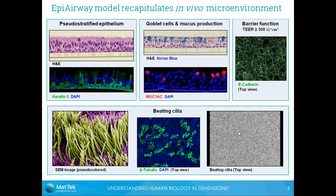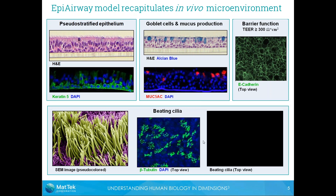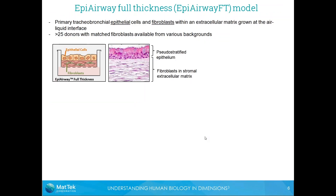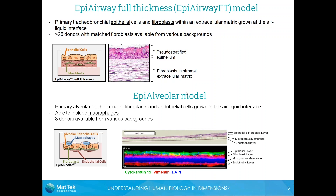The EpiAirway Full Thickness model is very similar to the EpiAirway model except it includes a stromal compartment composed of an extracellular matrix with fibroblasts. Our newer model, EpiAlveolar, is a model of the alveolar tissue. It is more complex: we seed endothelial cells on the basal surface of the microporous insert, and on the apical side we have both fibroblasts and alveolar epithelial cells, with macrophages that can be included if needed.